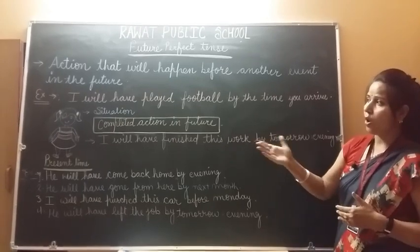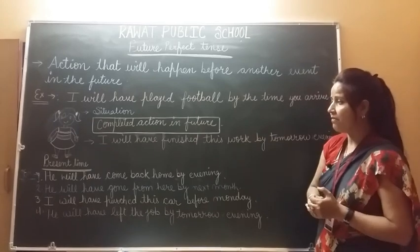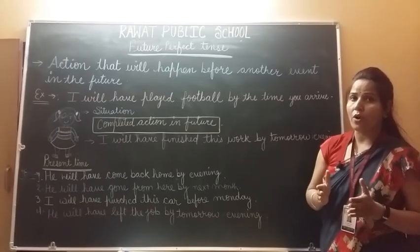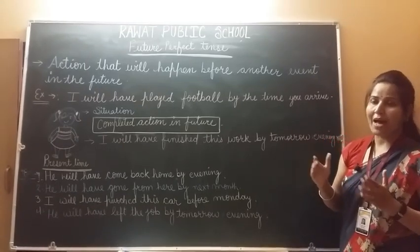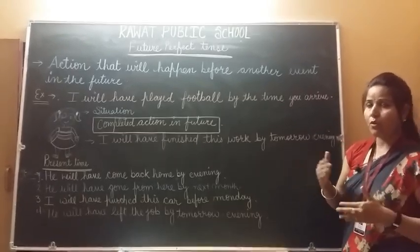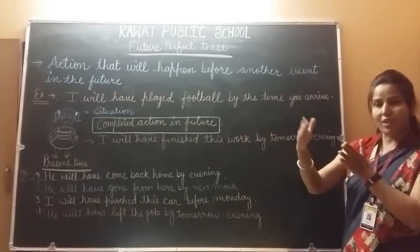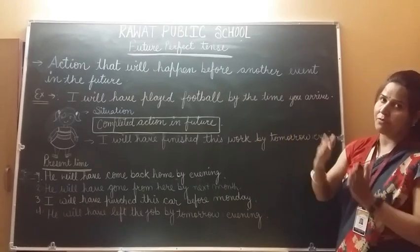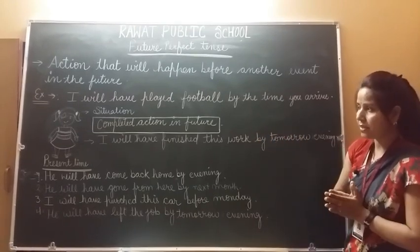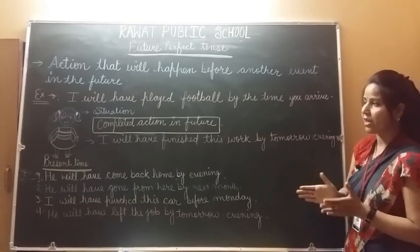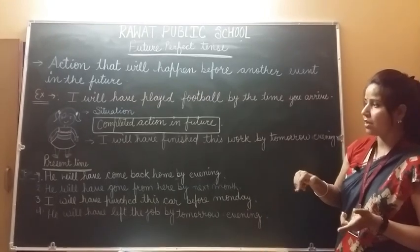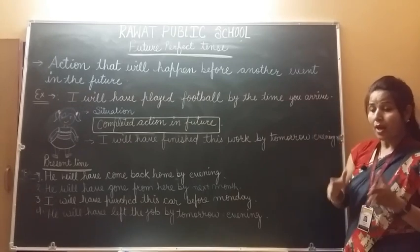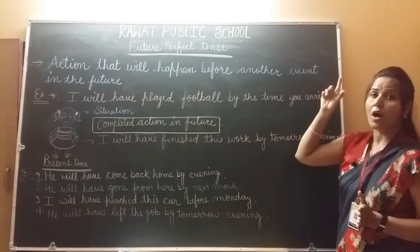Let's see examples of future perfect tense. First example: 'He will have come back home by evening.' We use 'by' meaning 'तक' — by evening means शाम तक. We use 'before' for 'पहले.' So वो शाम तक घर वापस आ चुका होगा — evening hasn't come yet, but by then he will have returned home.